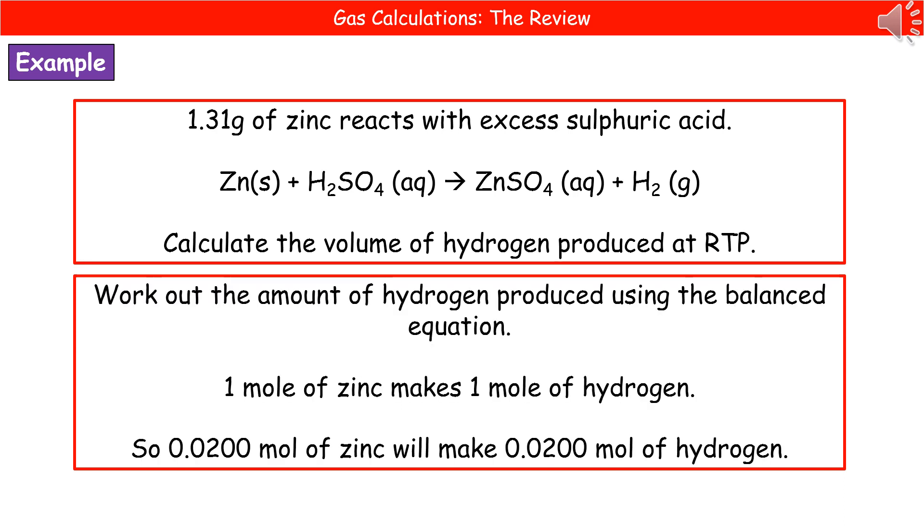Next we look at the balanced equation and we can see that 1 mole of zinc makes 1 mole of hydrogen gas. So we can apply that same ratio that we know that 0.0200 moles of zinc will therefore make 0.0200 moles of hydrogen.